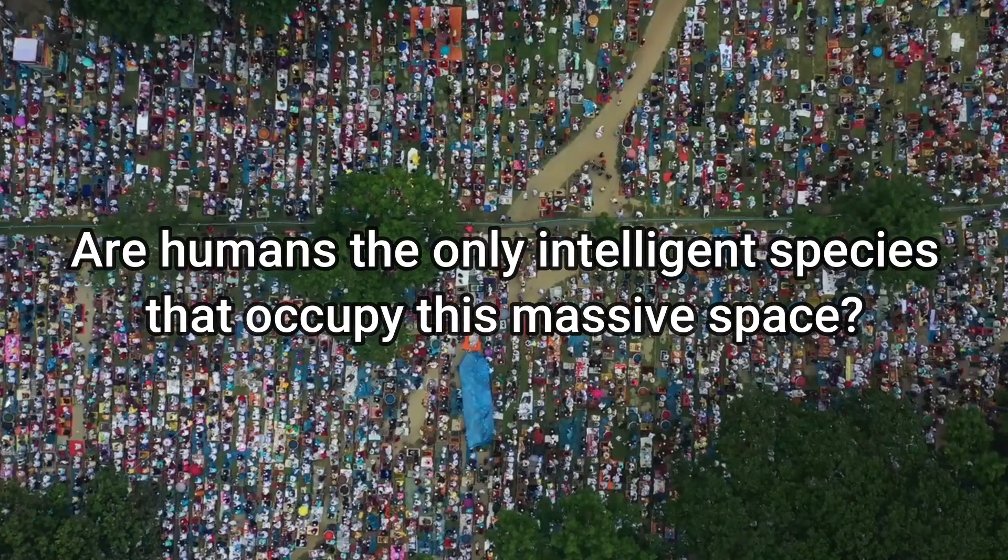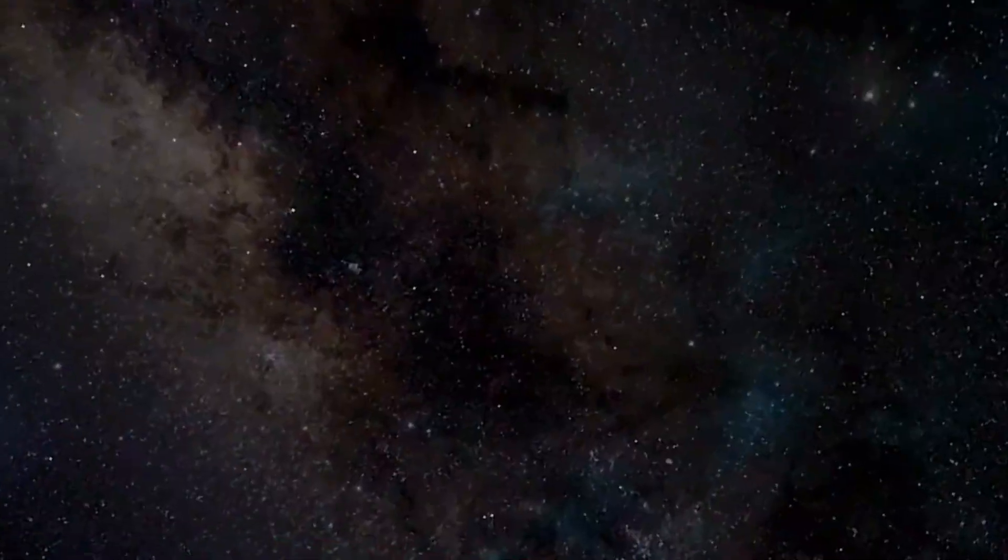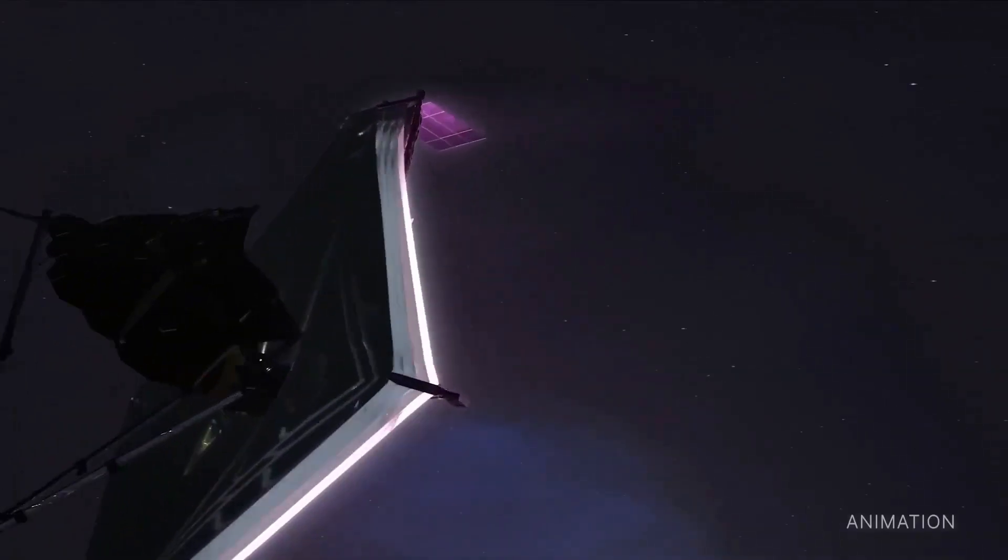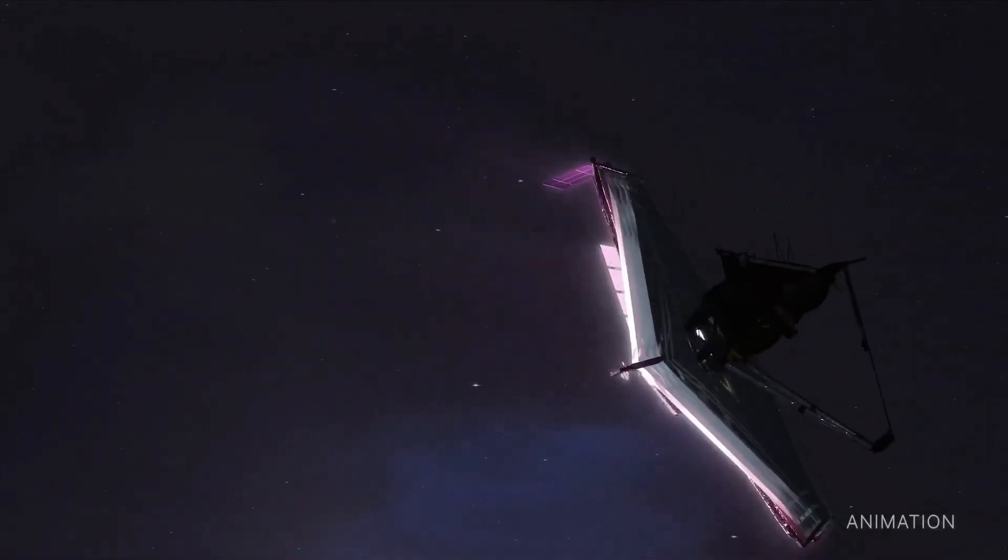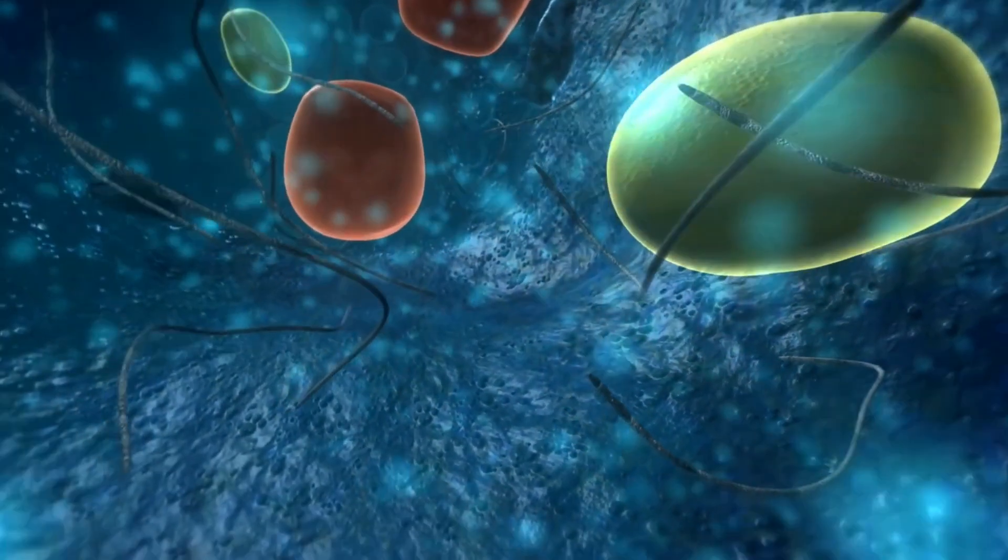But this begs the question: are humans the only intelligent species that occupy this mass of space? If not, where is everyone? New reports state that the James Webb Space Telescope may have finally found an answer by detecting signs of life on Proxima b. Let's take a closer look.